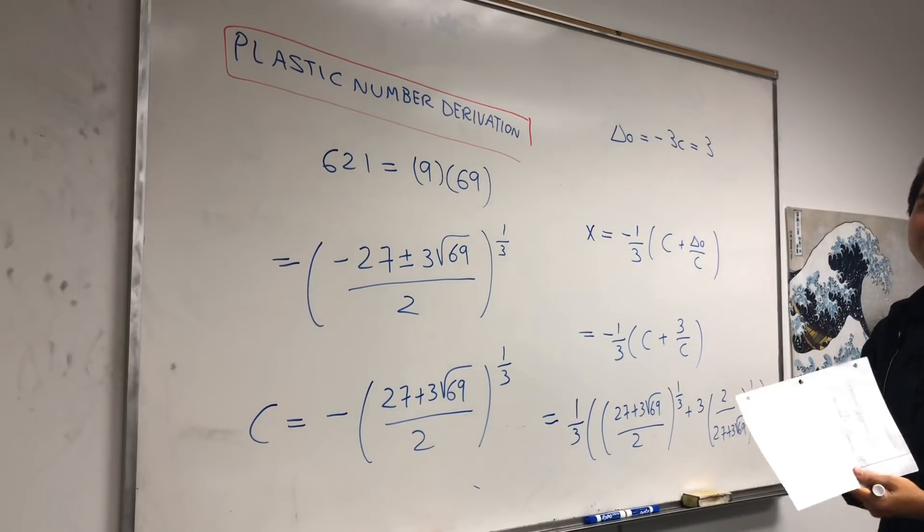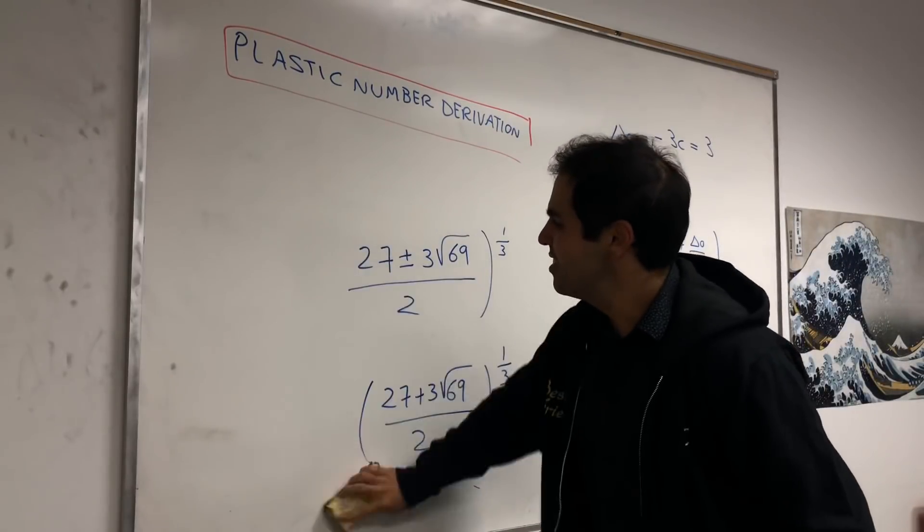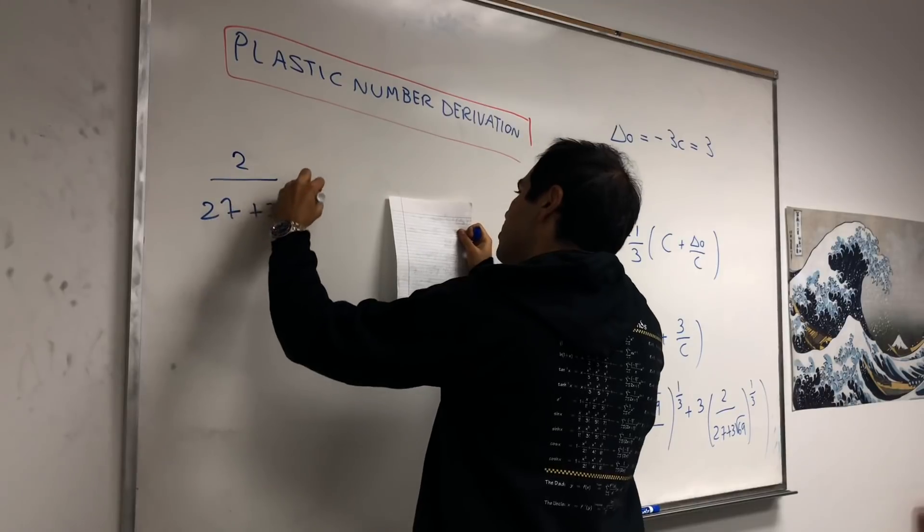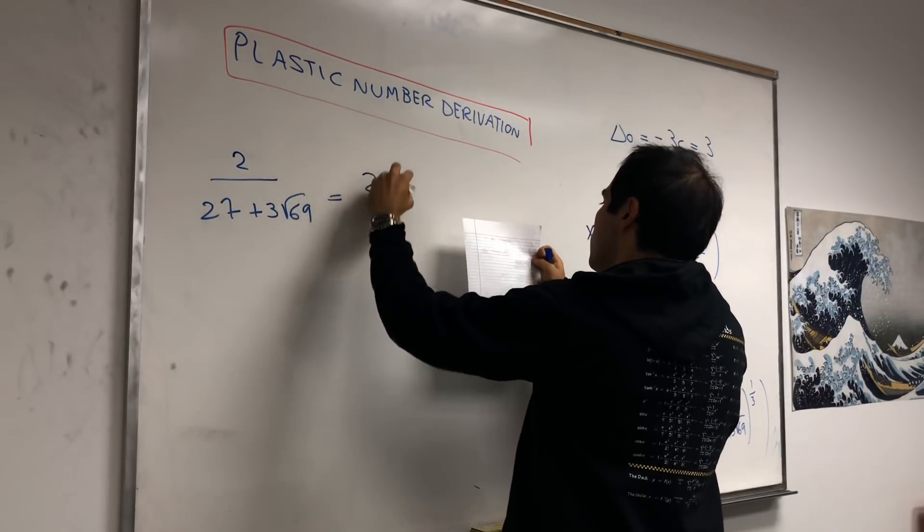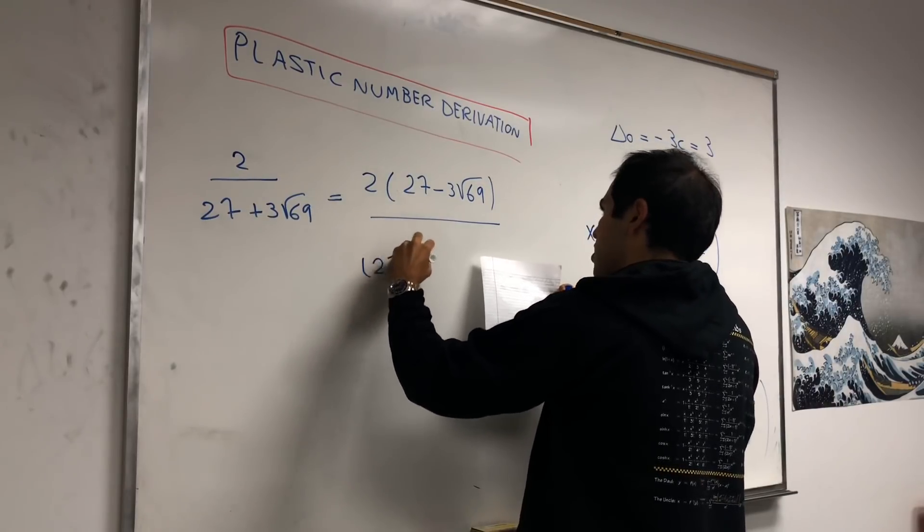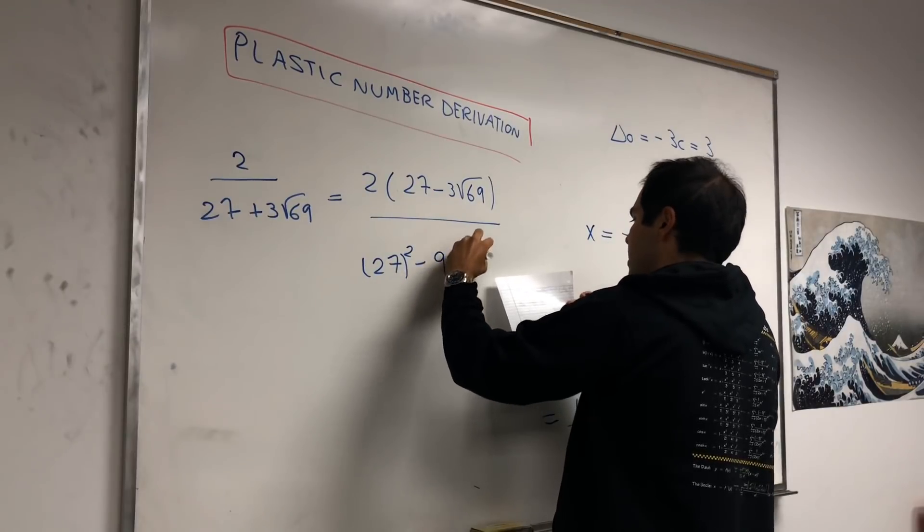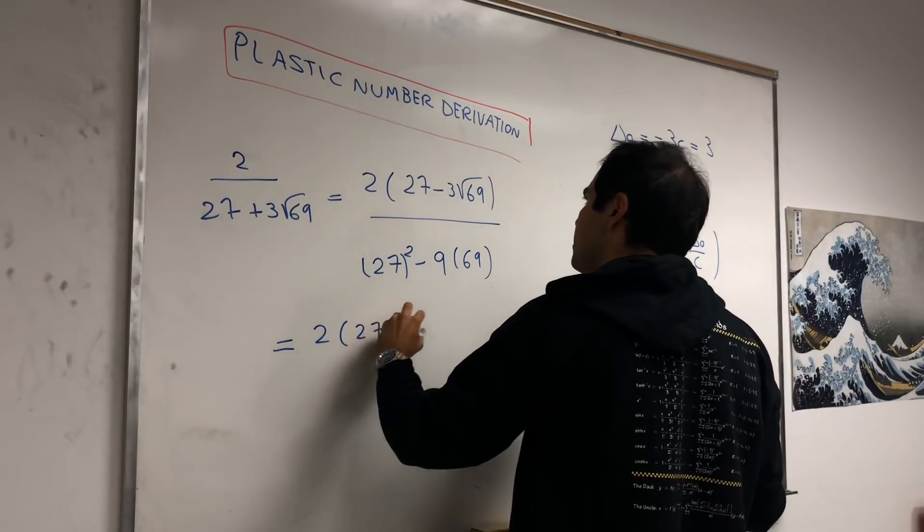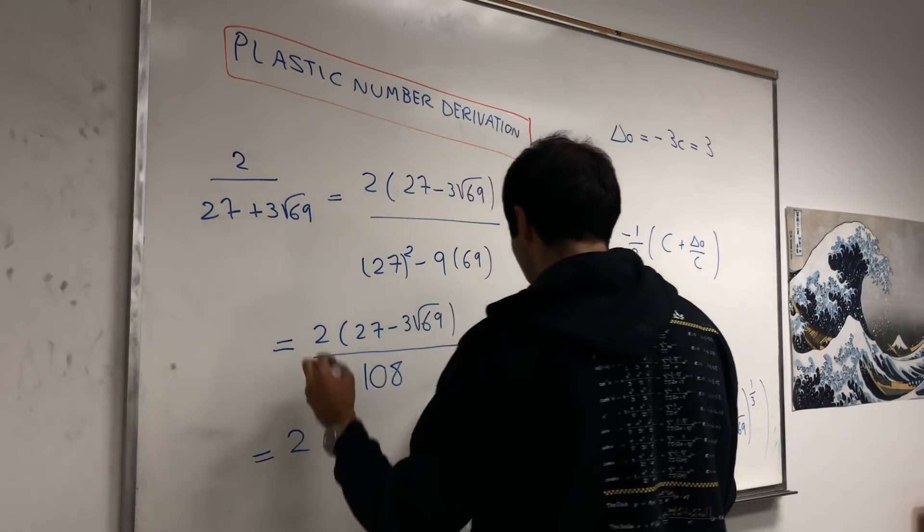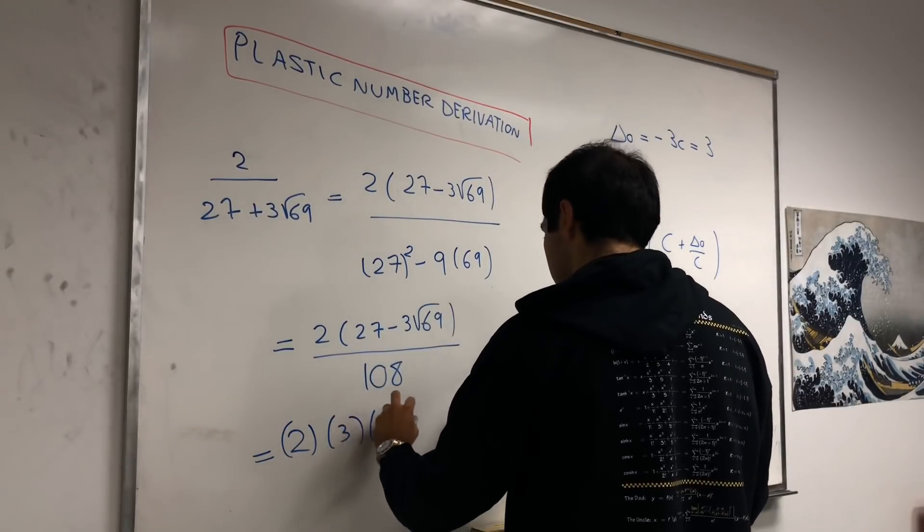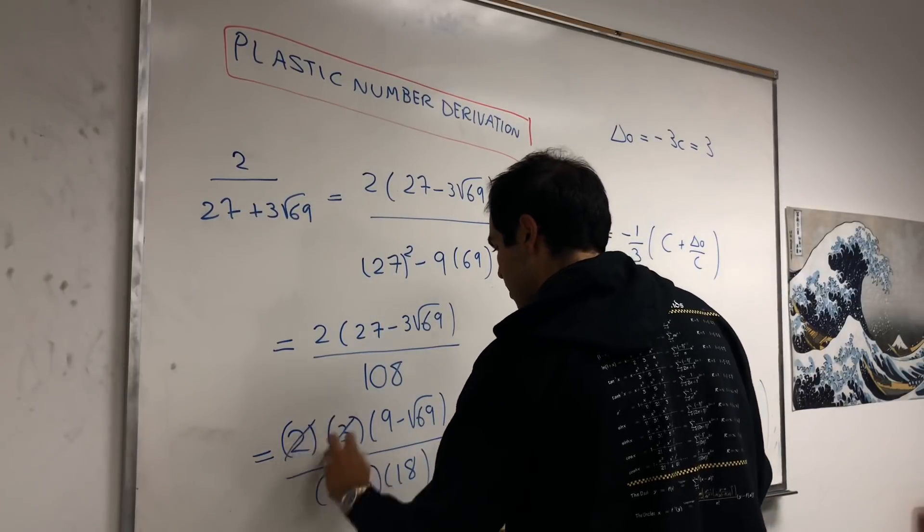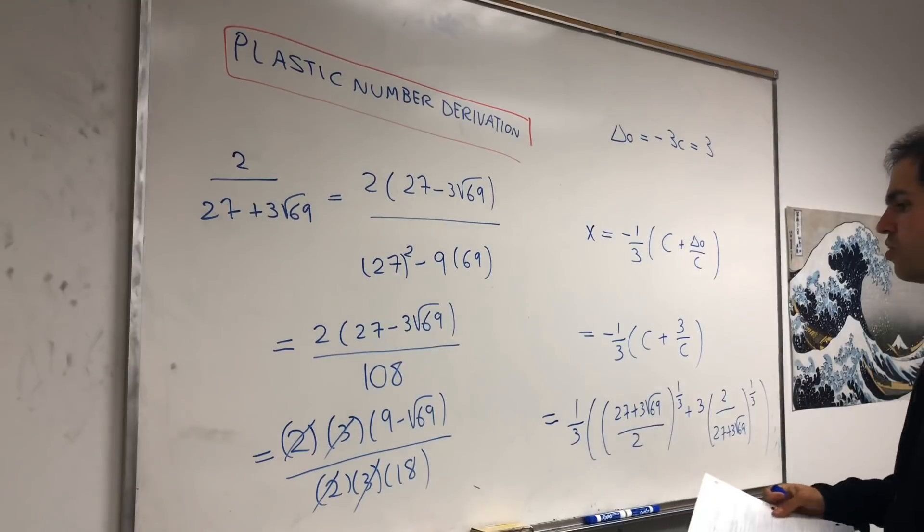And again, we have square roots on our denominator. So, let's just simplify it by the conjugate form to get, hopefully, a slightly simpler answer. So, 2 over 27 plus 3 square root of 69, that becomes 2 times 27 minus 3 square root of 69, over 27 squared minus square root of 3 times square root of 69. So, 9 times 69, and you simplify this as 2 times 27 minus 3 square root of 69 over, this turns out to be 108, and we get 2 times, if you want, you can factor out 3, 3 times 9 minus square root of 69, over 2 times 3 times 18.